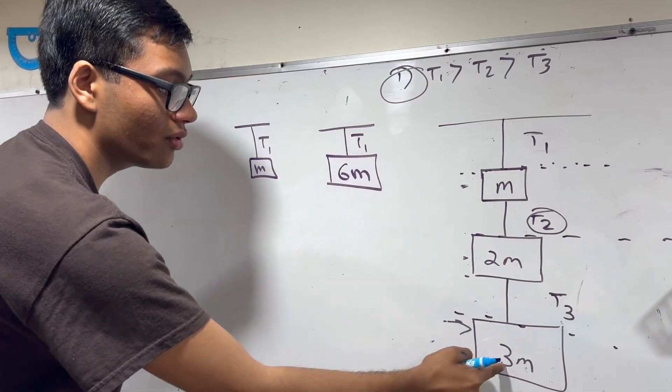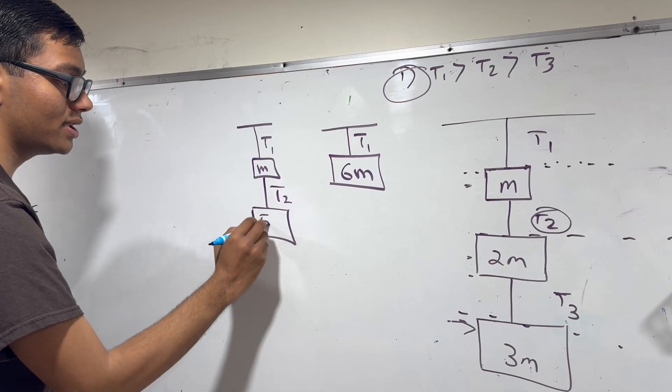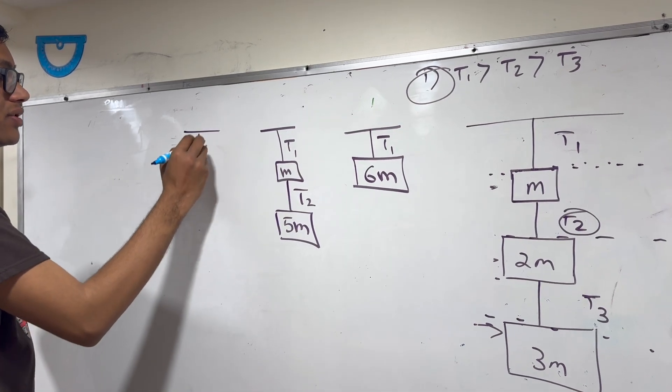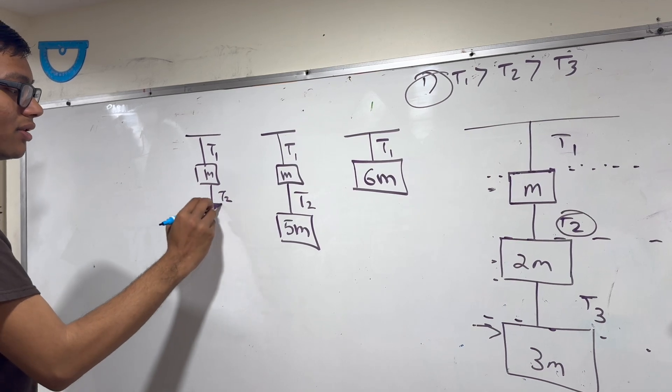The second rope doesn't know that there's m above it. It only knows that it has to pull 2m plus 3m, so the second rope only knows that it has to pull 5m mass.